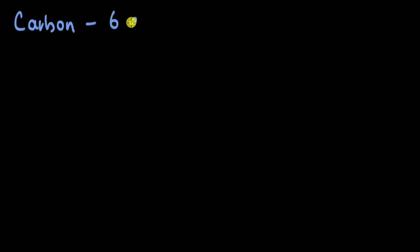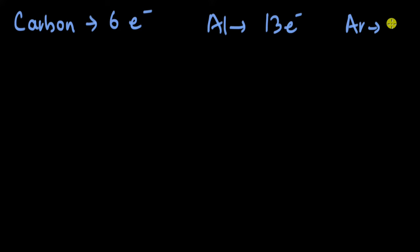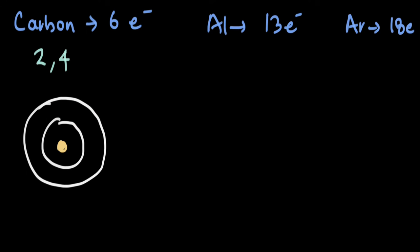Let's look at three more examples. Carbon has six electrons, aluminium has 13 electrons, and argon is an inert gas with 18 electrons. For carbon: the first shell holds a maximum of two, and the remaining four go to the second shell. So carbon's electron configuration is 2, 4 — drawn as a nucleus with a first orbit of two electrons and a second orbit of four. Now pause the video and try the same for aluminium and argon.